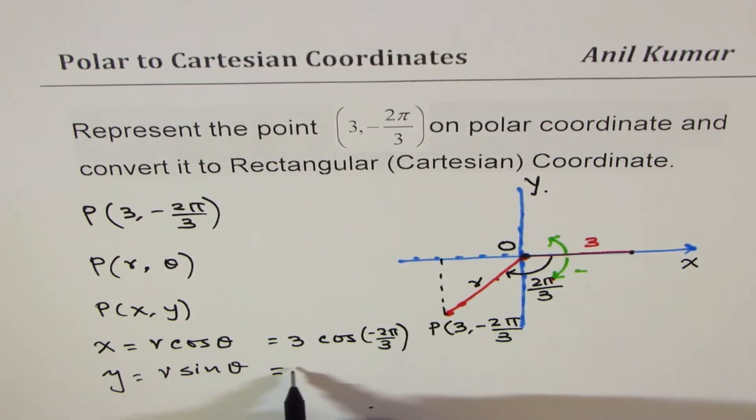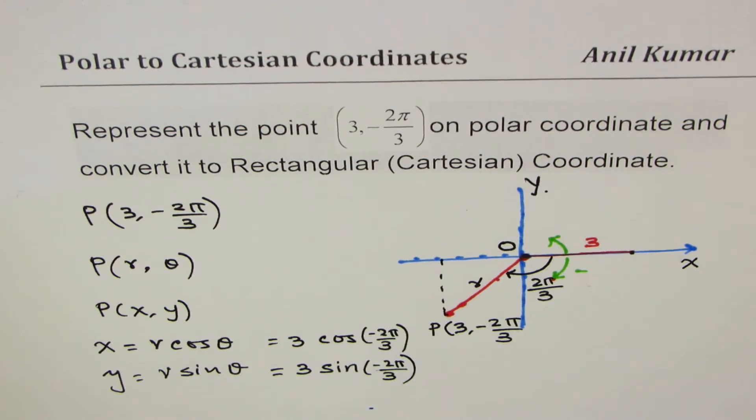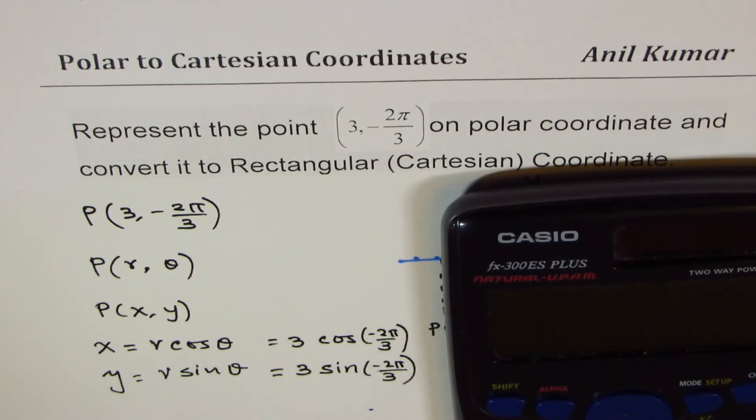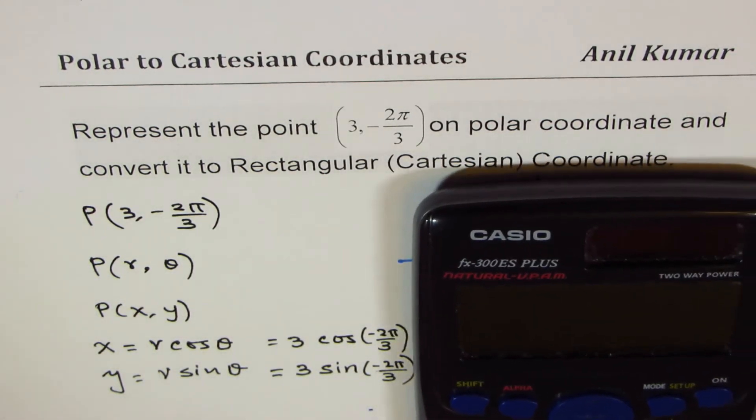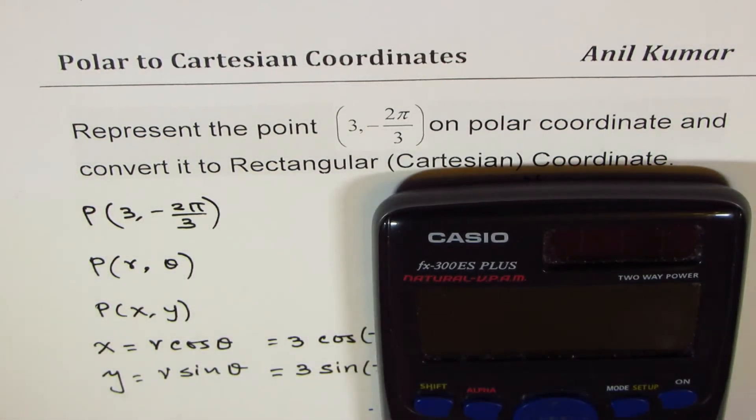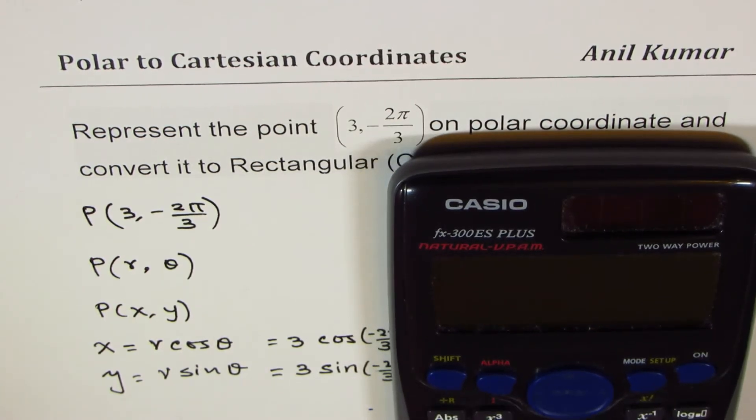Similarly, for Y value, we can write Y = 3 sin(-2π/3). Now, your calculator should be in radian mode—that is very important, otherwise you may get a wrong answer. Let's calculate: 3 cos(-2π/3) equals...